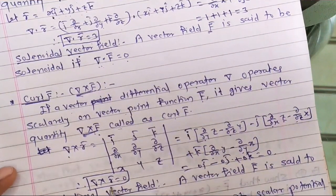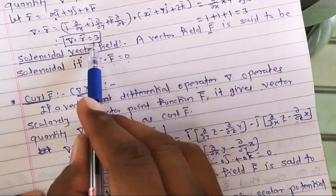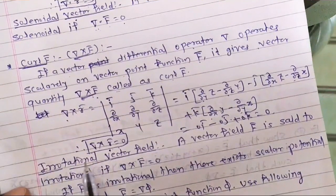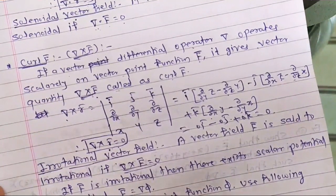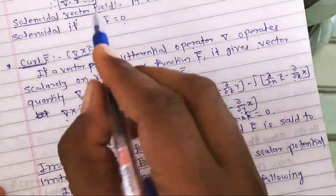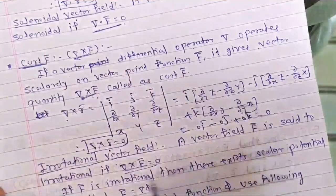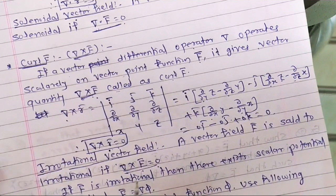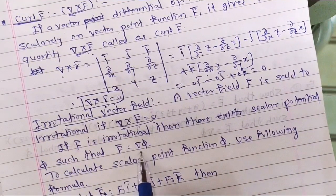So the value of del cross r̄ is always 0. These two standard results are very important for solving problems on vector identities: first, del dot r̄ = 3, and second, del cross r̄ = 0. A vector field F̄ is said to be irrotational if del cross F̄ = 0, and F̄ is solenoidal if del dot F̄ = 0.